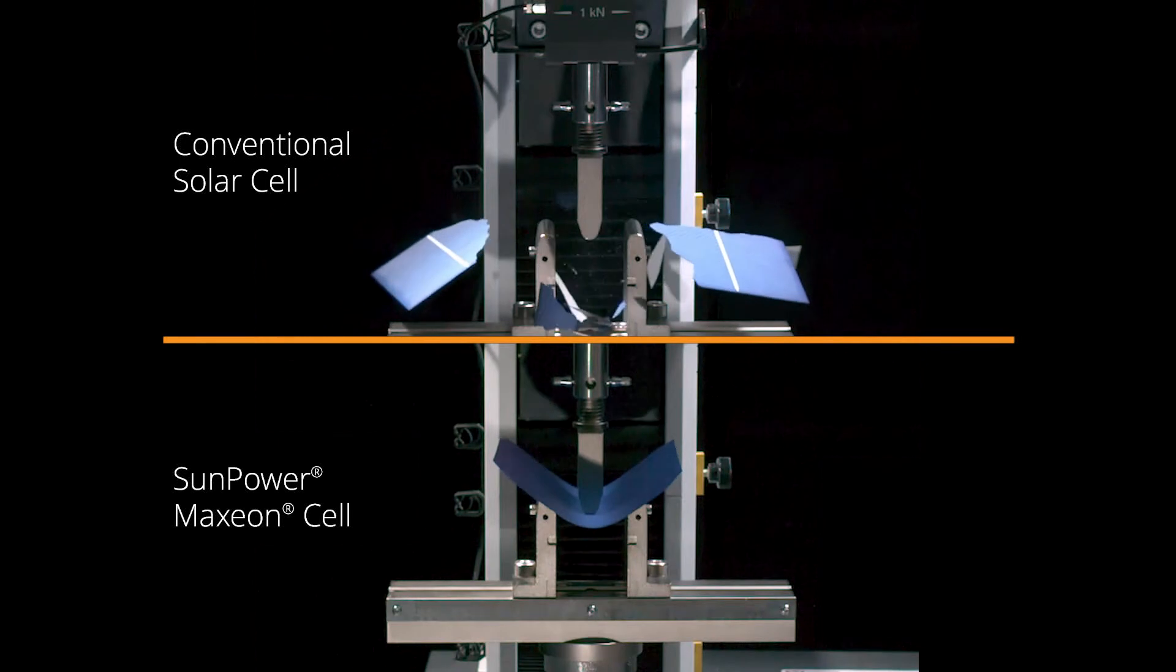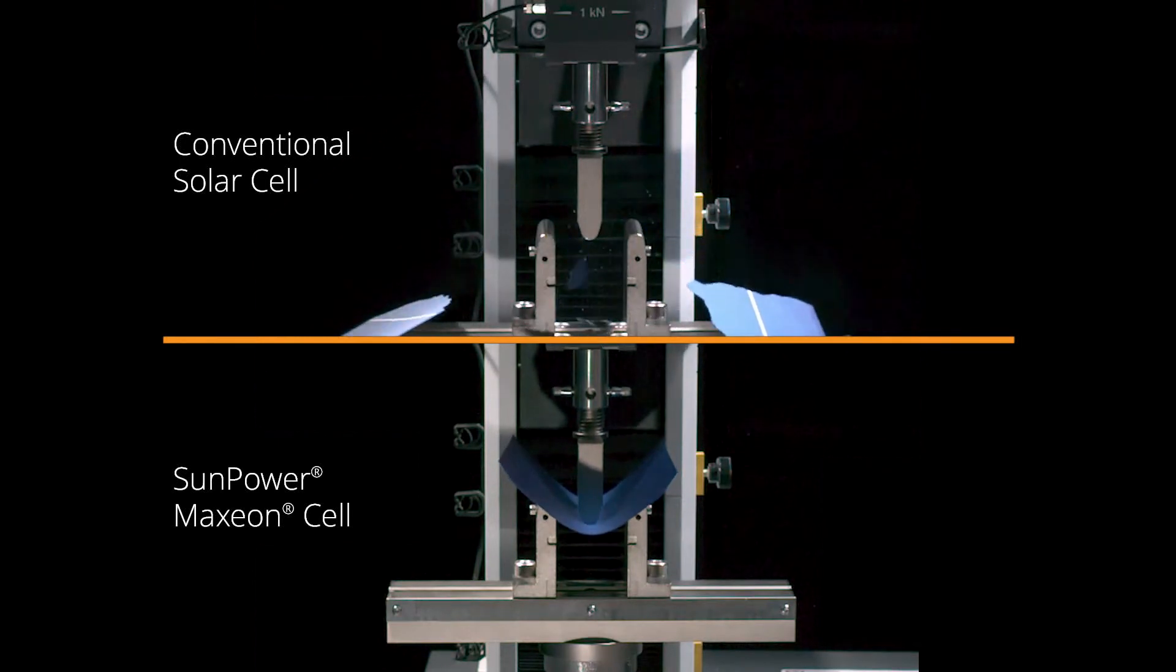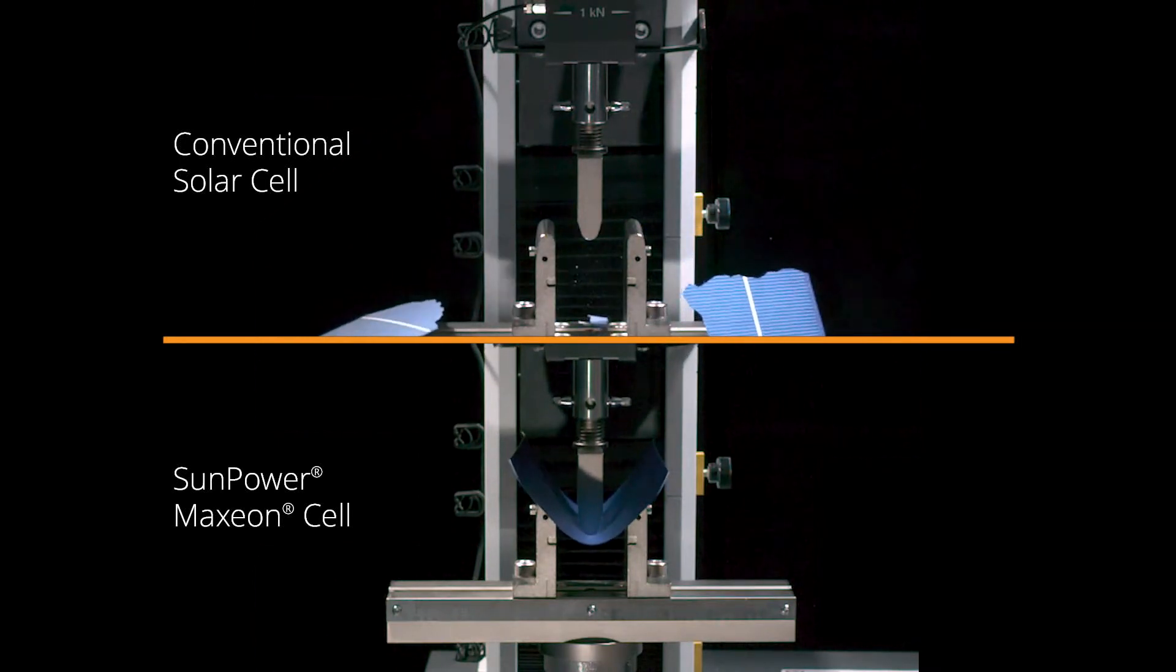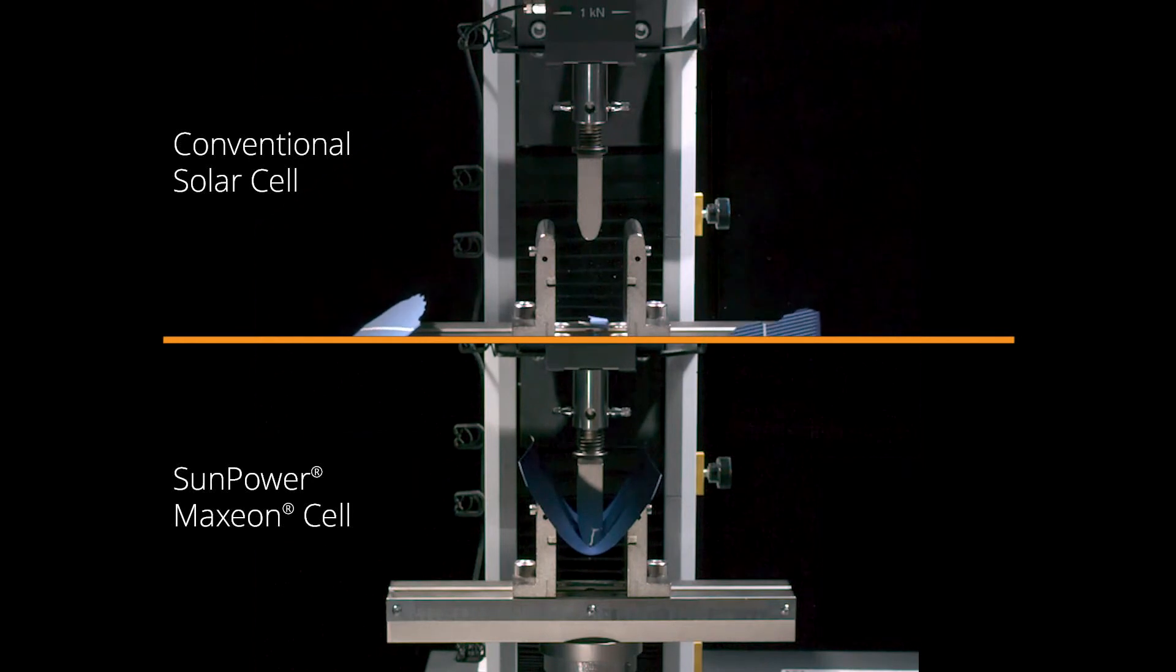Where others break, Maxion bends, ensuring your flow of solar energy continues uninterrupted to maximize your savings.